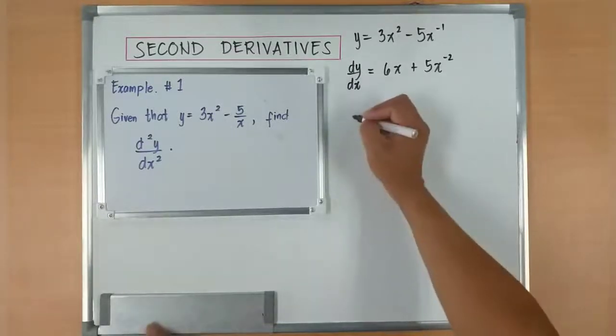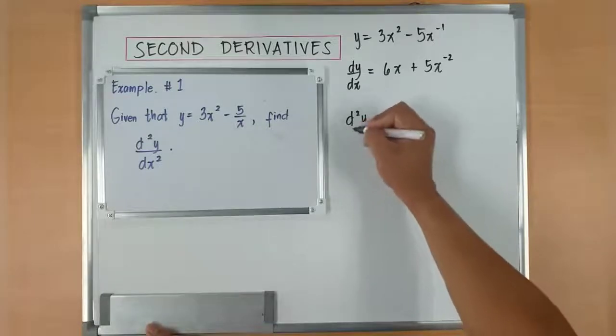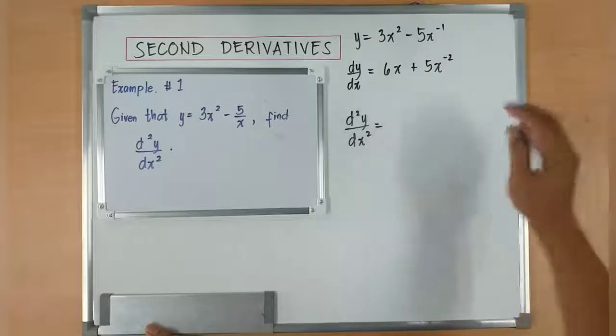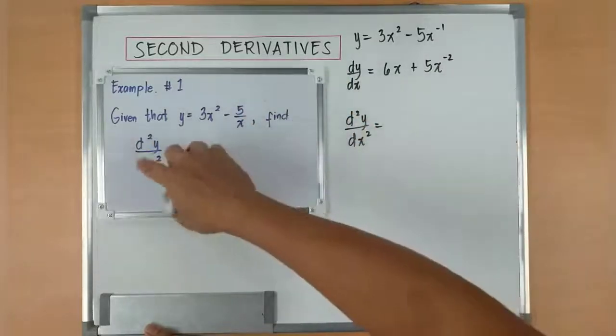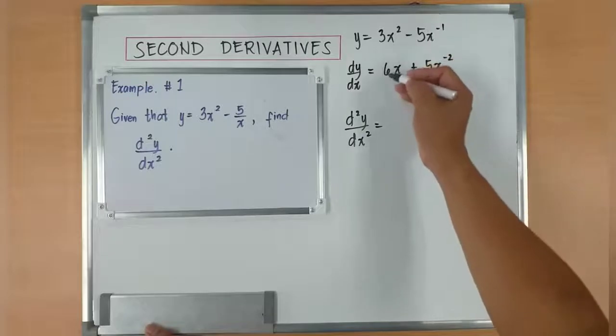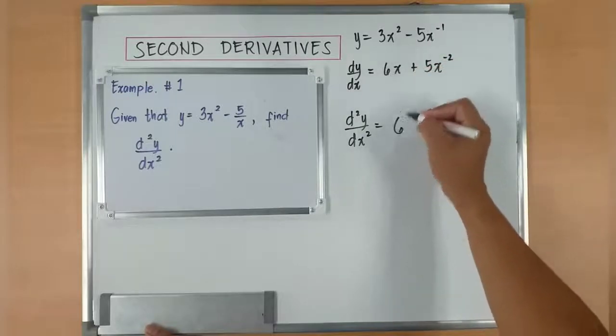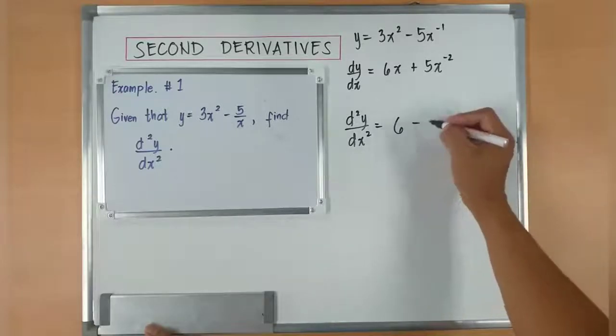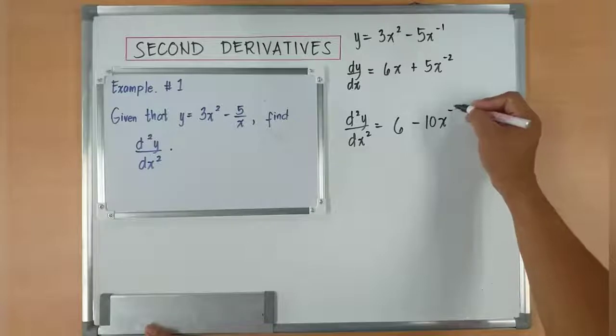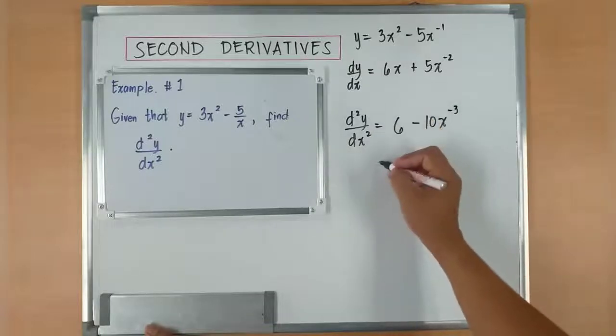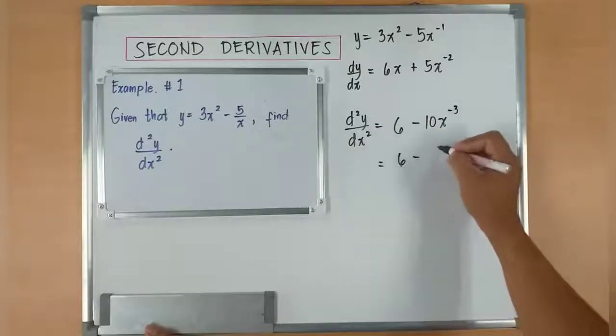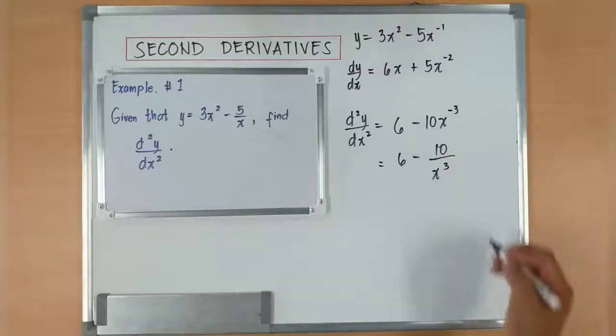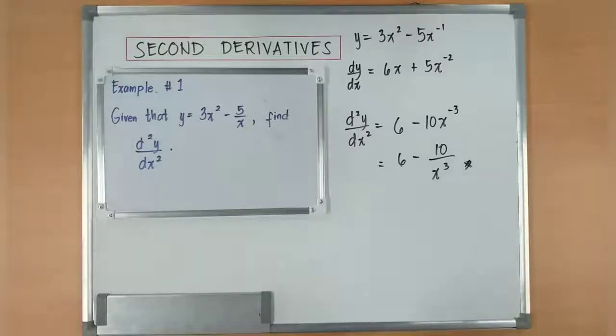To find out d squared y over dx squared, get the derivative of this. You'll get the second derivative. So this one will become 1 times 6 is 6. x to the power of 0 is 1. 1 times 6 is 6. Plus or minus 10x to the power of negative 3. So this one is equivalent now to 6 minus 10 over x cubed. This will be our answer.